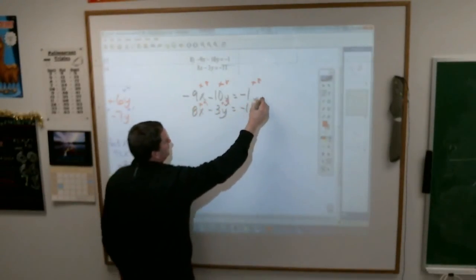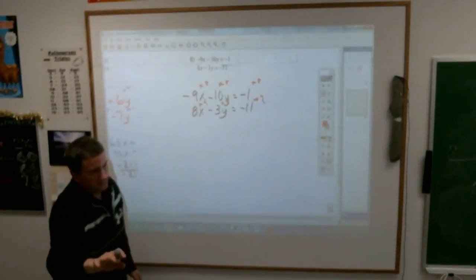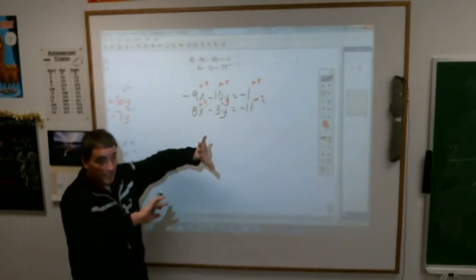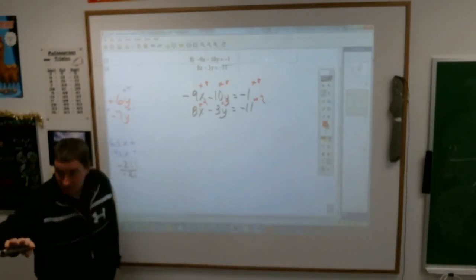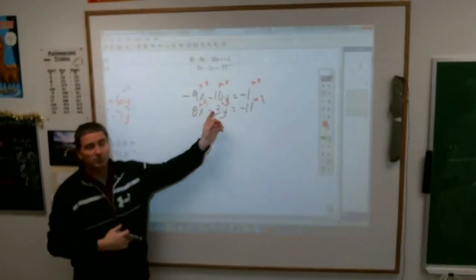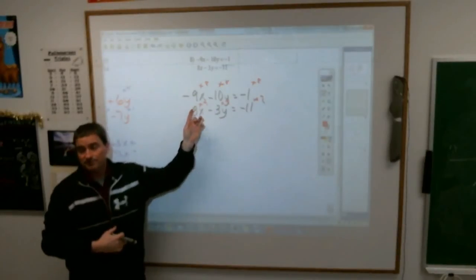You don't have to do this like this. I mean, you could have done this times 3 and that times 10. This one is it. You'll get the same answer. You'll get the same answer, Taylor. It doesn't matter. Actually, Taylor, I would pick your way because these already were opposites. Yeah, that's right.